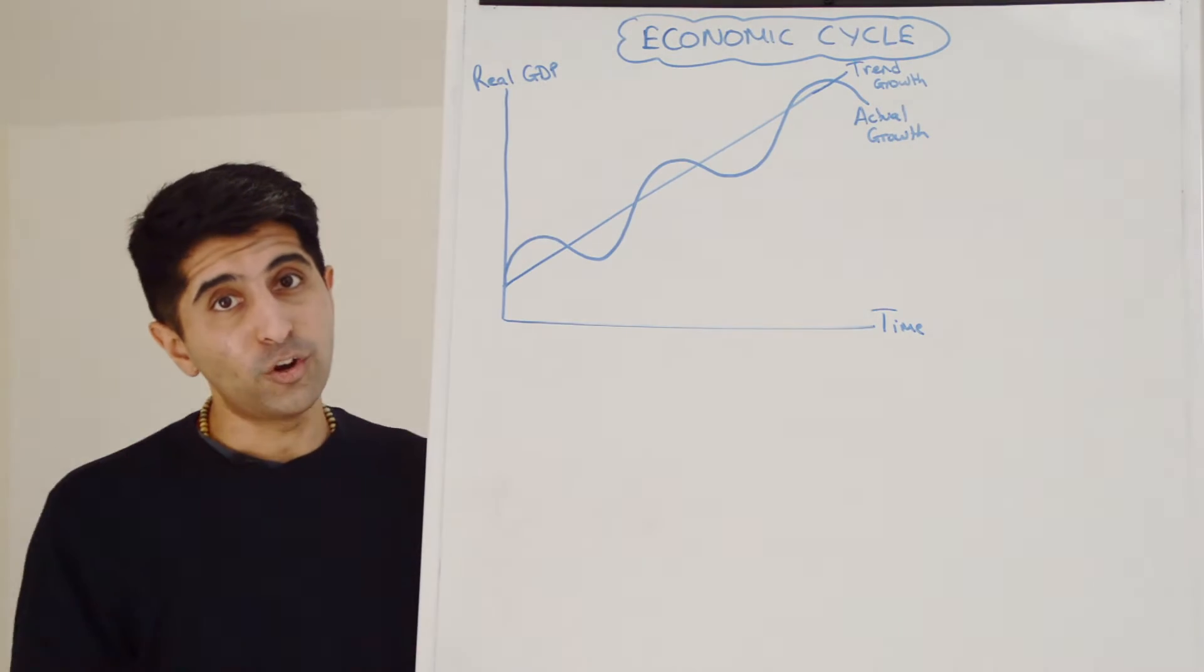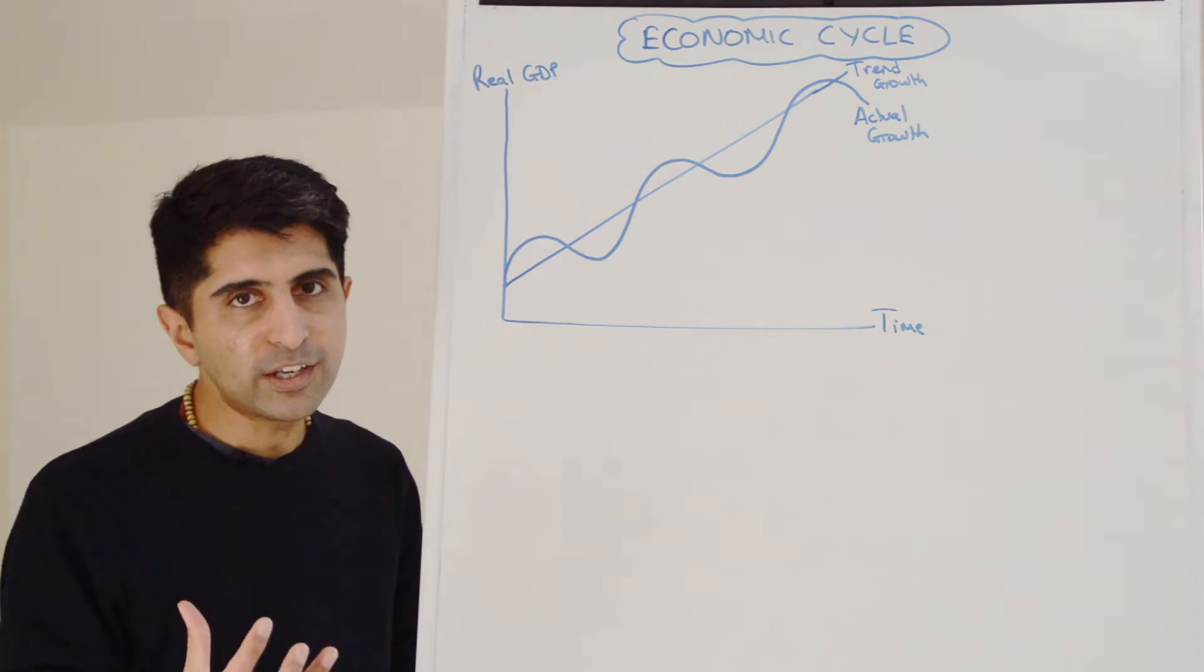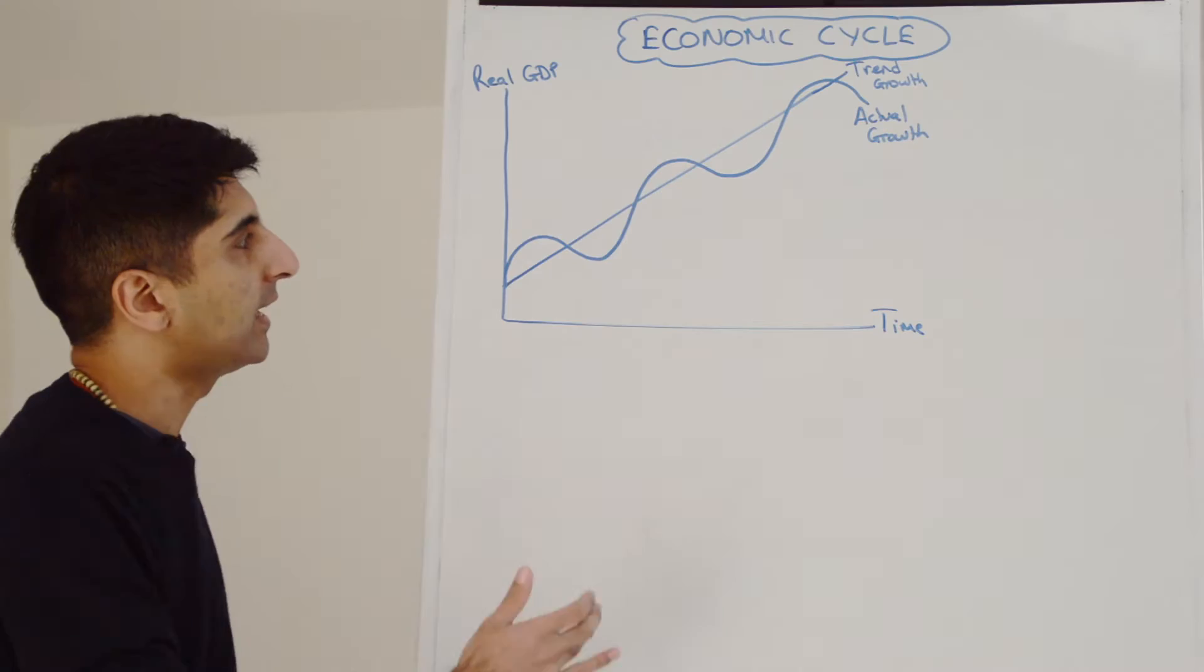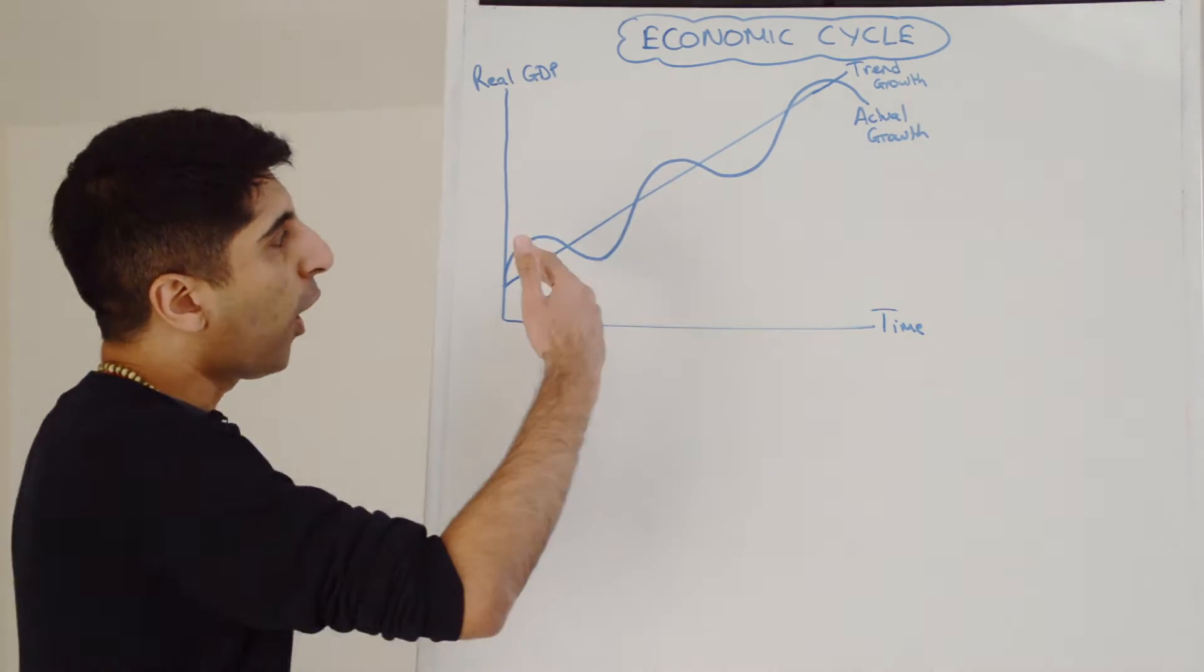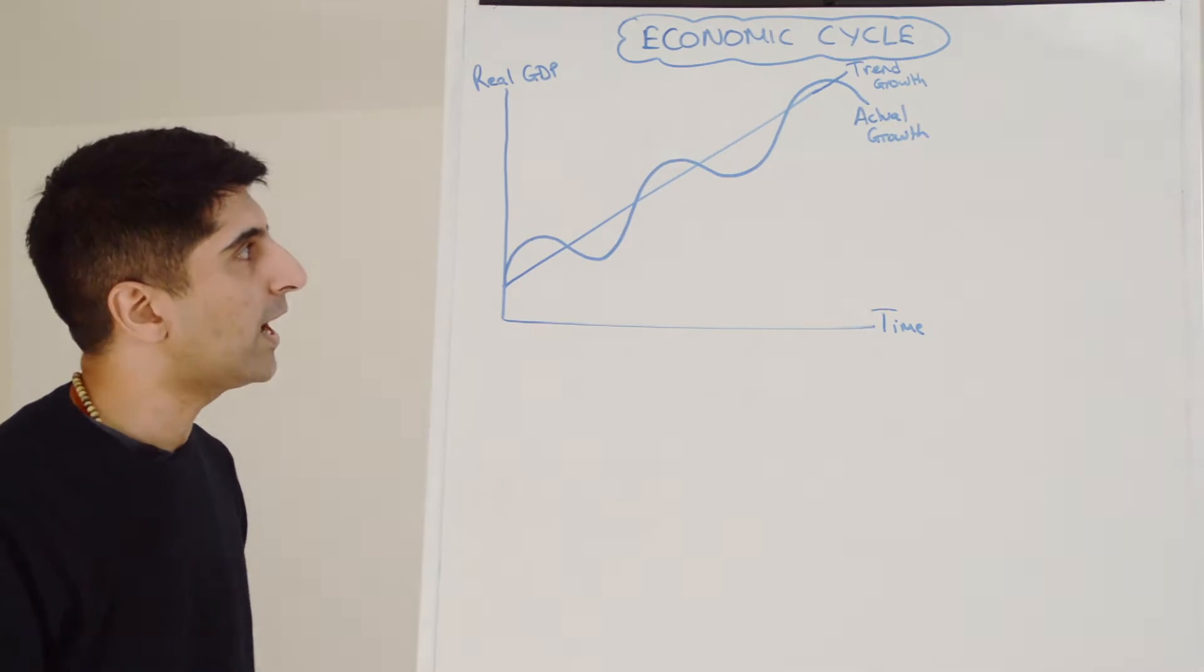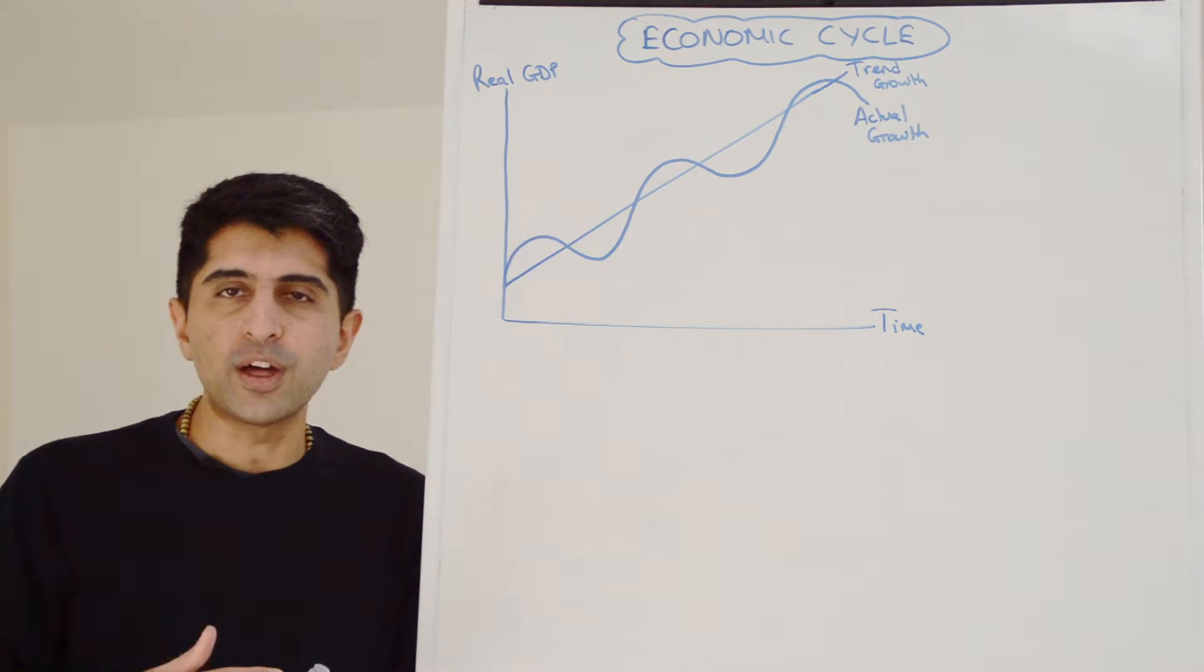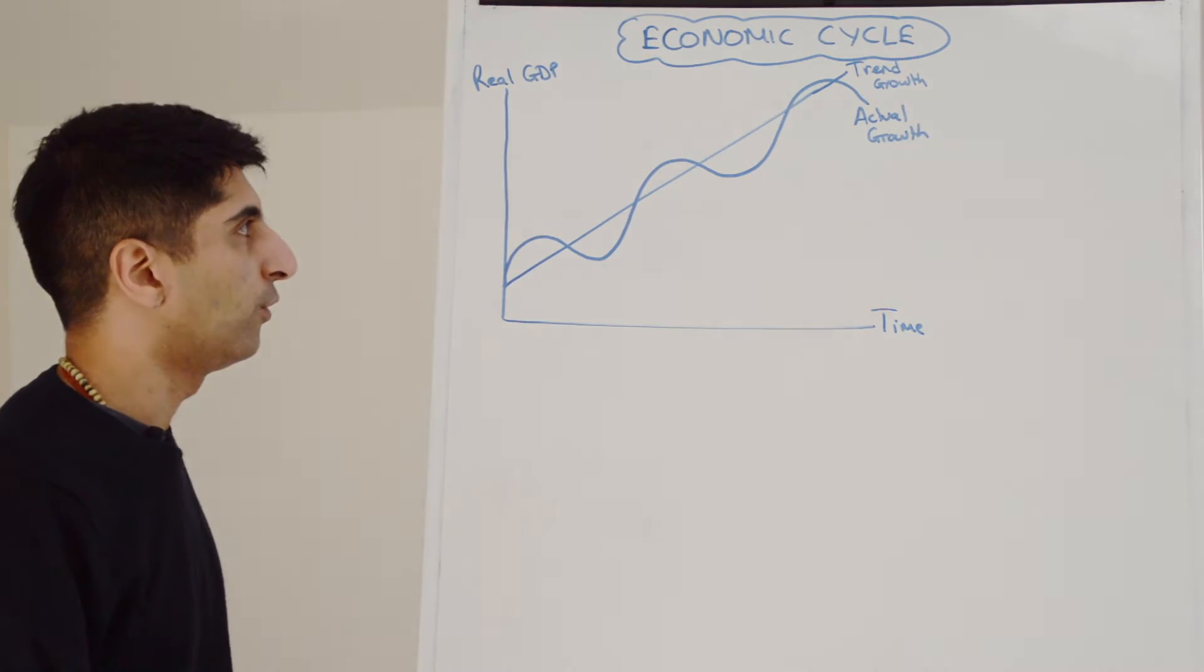And that is the economic cycle, also known as the business cycle, fluctuations in GDP. But what we can see is that the actual growth line, even though it's fluctuating up and down, over time it's still rising. So we're still getting increases in growth over a given period of time, just not nice and smooth and consistent, like we would hope for, given our objective of growth.